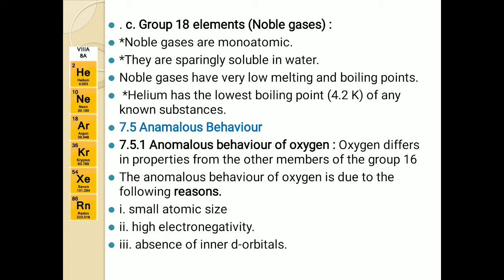Why does it behave differently? Oxygen is located in the 16th group and second period. In general, as we have studied last year, the elements in the second period show some anomaly. We have seen the anomalous behavior of boron in the 13th group, beryllium in the 14th group, and carbon in the 15th group. In the same way, oxygen in the 16th group shows anomalous behavior.